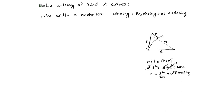Off-tracking means the front wheels and back wheels differ by this much distance. This is the extra width required for mechanical widening, required for each lane.